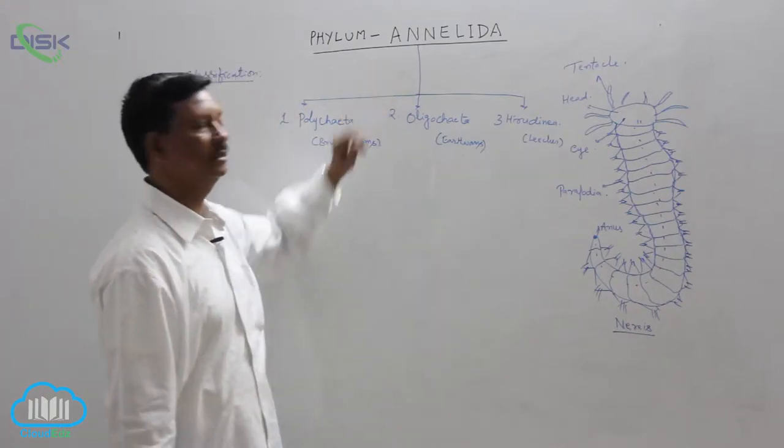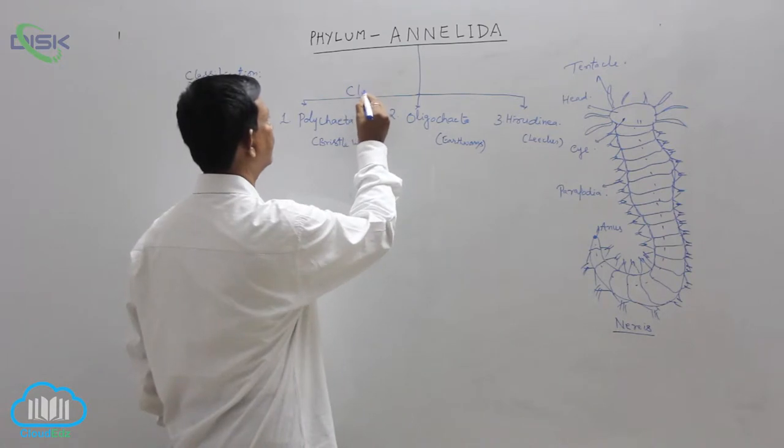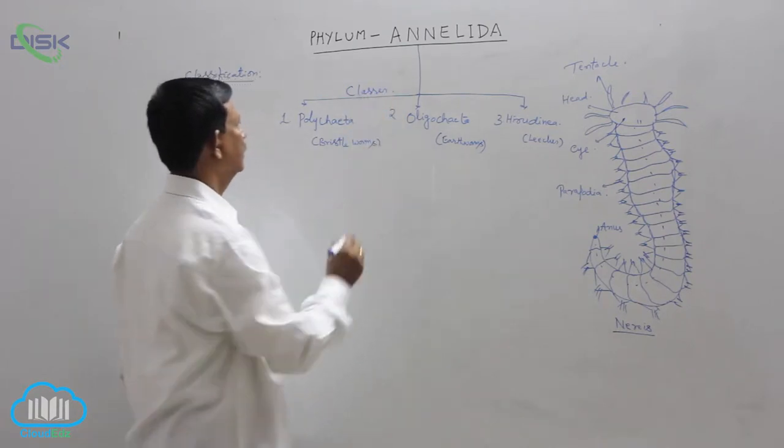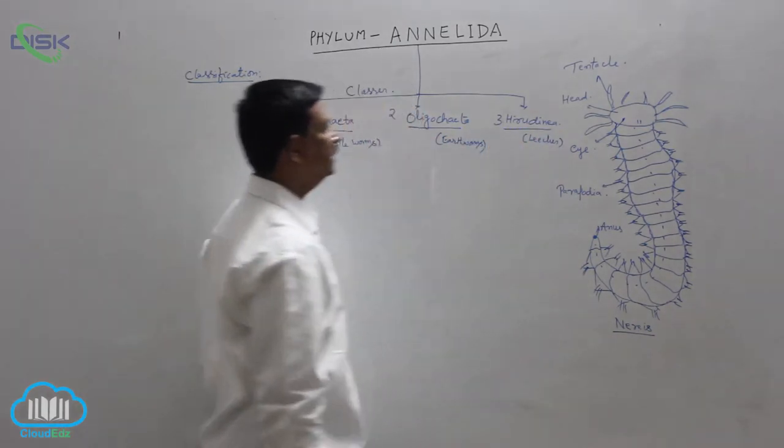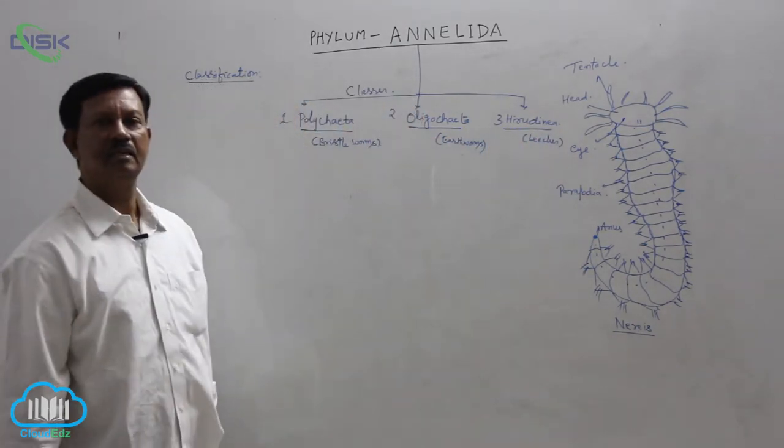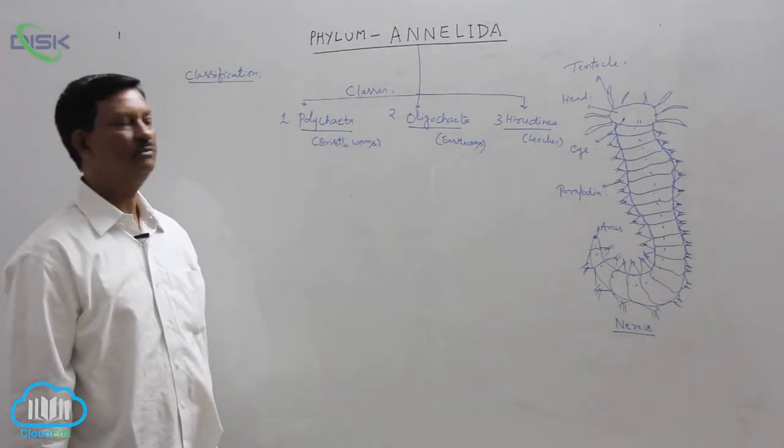Classification of the phylum Annelida. Phylum Annelida is divided into three classes: Polychaeta, Oligochaeta, and Hirudinea. The classification is based on the presence or absence and number of setae.